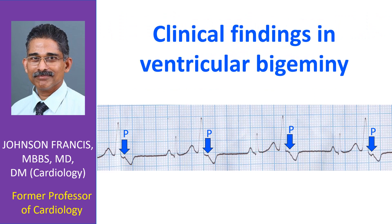In this case, P waves during the VPC are occurring when the atrioventricular valves are closed due to ventricular systole of the PVC. They will therefore produce regular cannon waves in the jugular venous pulse at a rate half that of the ventricular rate.